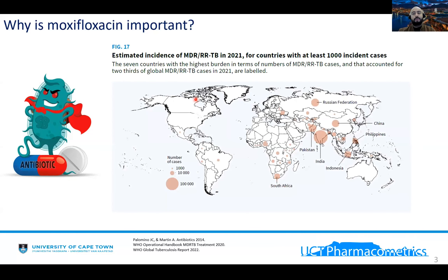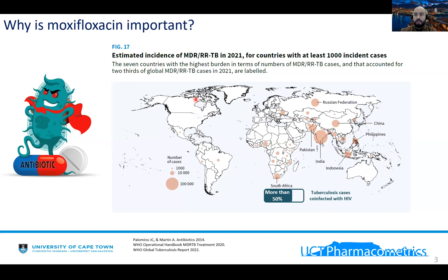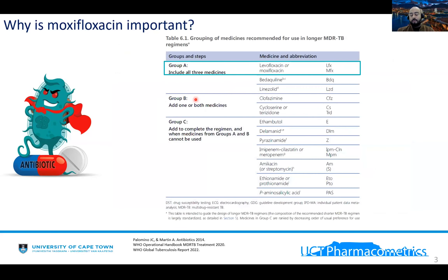Multidrug-resistant tuberculosis is still a major issue worldwide, and South Africa is one of the seven countries with the highest burden of tuberculosis cases. It has been reported in different areas of South Africa that more than 50% of tuberculosis cases are also people living with HIV. That makes a huge problem that we need to work to solve. Moxifloxacin is actually recommended by the WHO as part of Group A to treat multidrug-resistant tuberculosis, together with three other drugs.